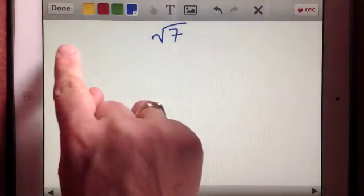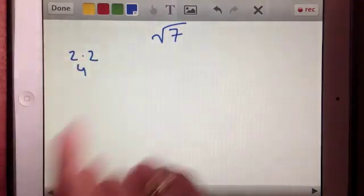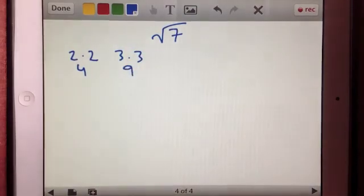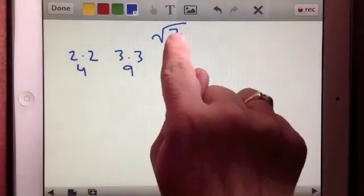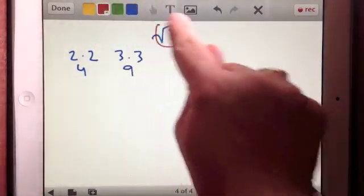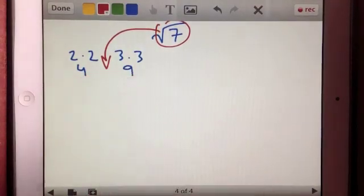I know that 2 times 2 equals 4 and I know that 3 times 3 equals 9. 4 is less than 7 and 9 surpassed 7. So that's telling me that this value falls somewhere in between the square root of 4 and square root of 9.